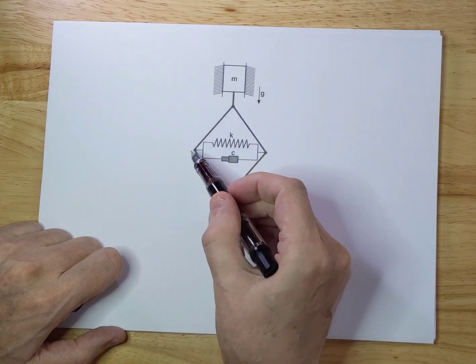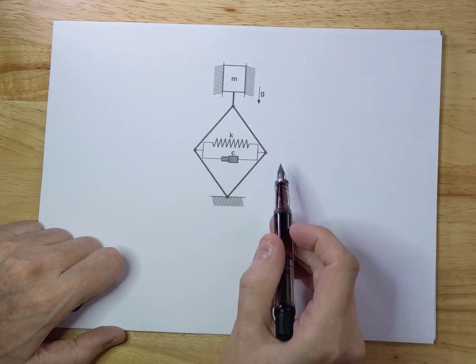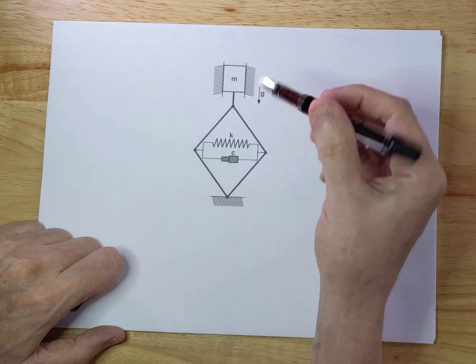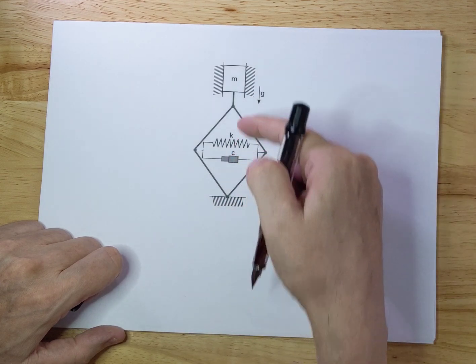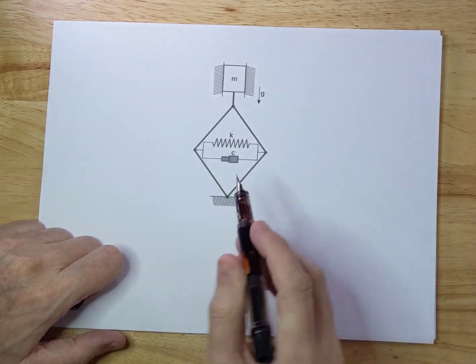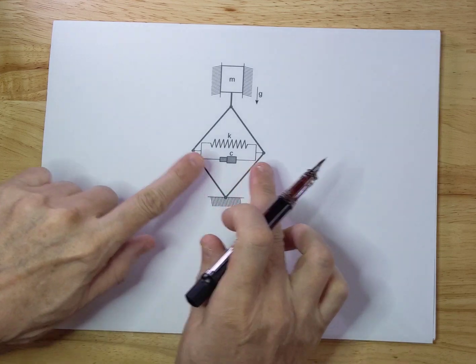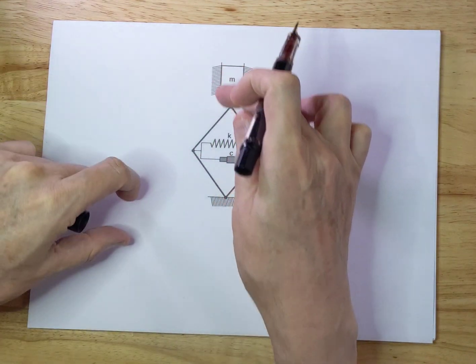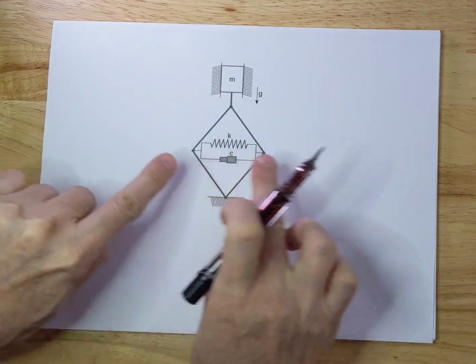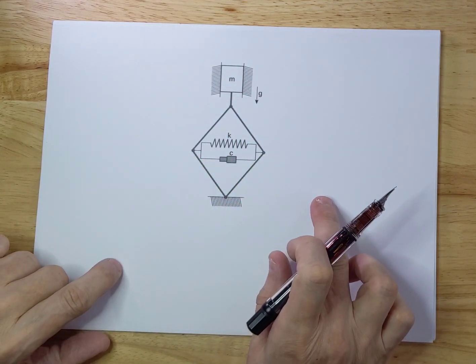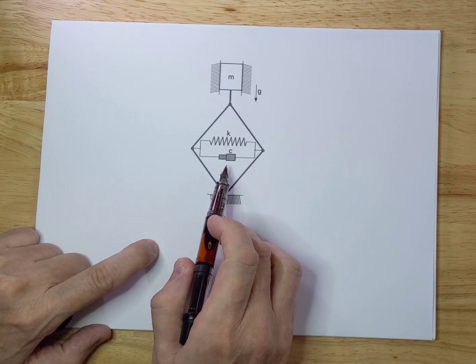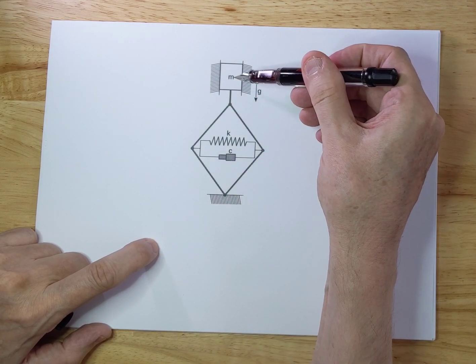There are four fixed rods here, sturdy rods, that pivot around these points. If you move the mass up and down, these two points will move in and out. This will move in the horizontal direction, and therefore the spring and the damper will be loaded and unloaded accordingly if the mass goes up and down.